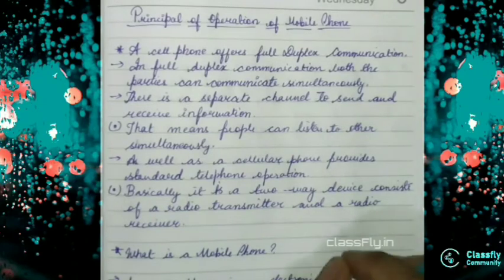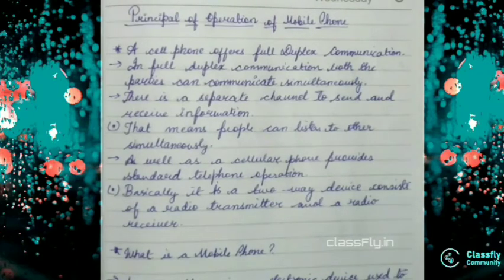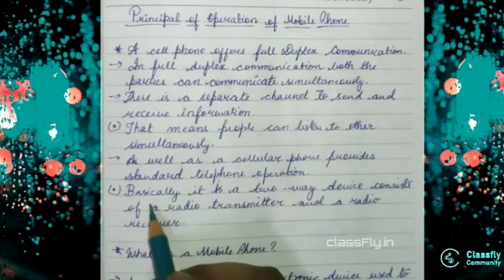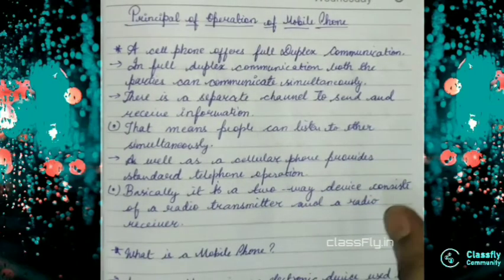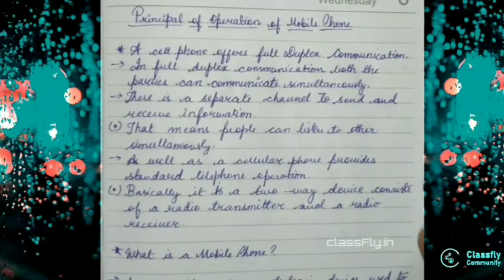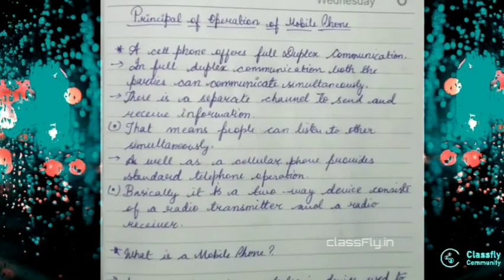Basically this cellular phone or mobile phone is a two way device. How it is a two way device? I will be transmitting some information and the other party will be receiving the information. So the transmission is one form and the receiving is another way. So it is a two way device. So in simple words we can say basically it is a two way device consists of a radio transmitter and a radio receiver.